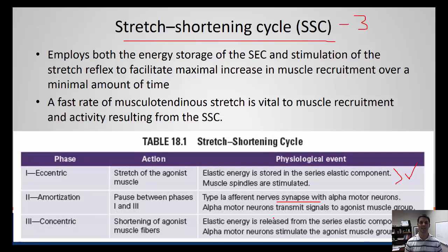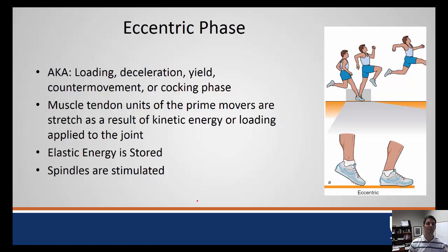Let's break down the eccentric phase. It can be called the loading phase, deceleration phase, the yield, counter movement, or cocking phase. The tendon units of the prime movers are stretched as a result of the kinetic energy. The example here is taking off in a long jump. As we zoom in on this, we are concentrically contracting, our gastroc here is contracted and shortened. As we get in the landing phase of the long jump, we then undergo an eccentric contraction here in our calf muscles. In that eccentric contraction, we are storing energy in the myotendinous junction as well as activating the spindles.